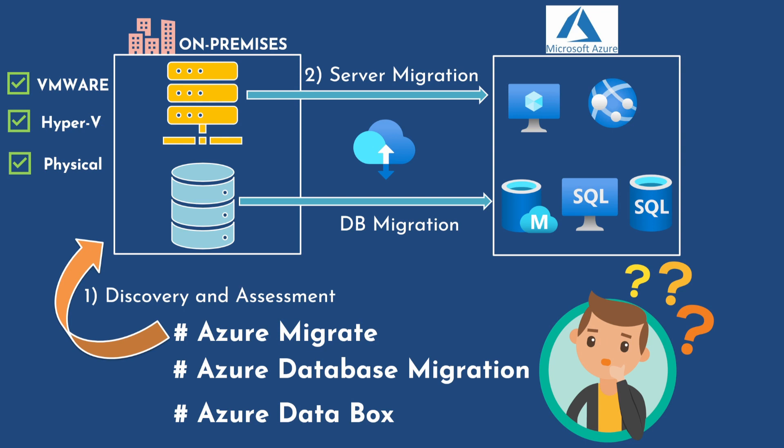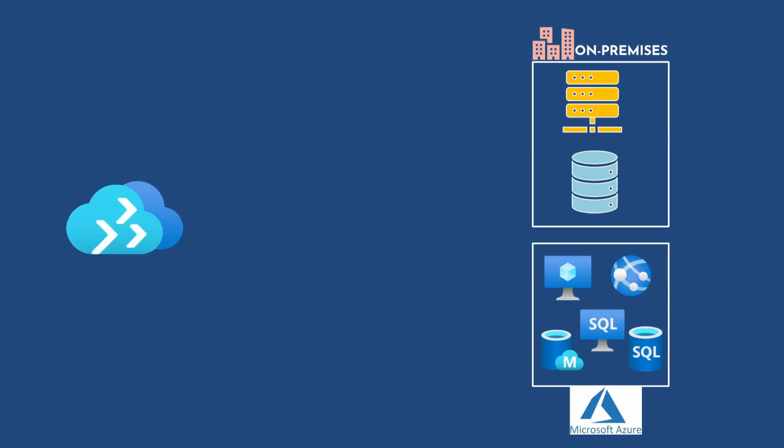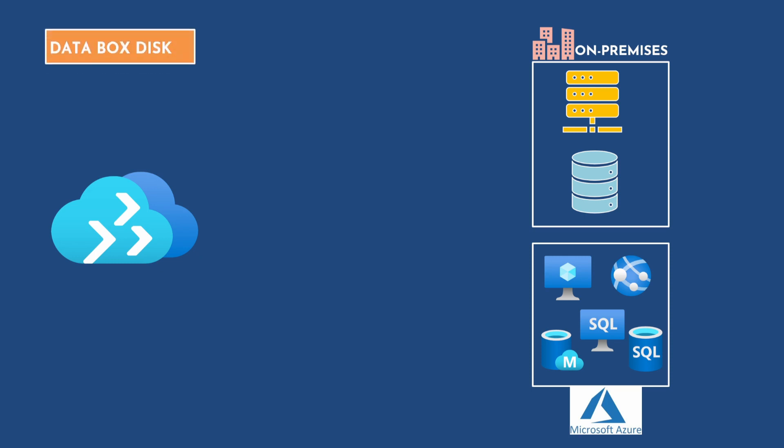We also have Azure Data Box, which is used to move large amounts of offline data to Azure. It is a physical migration service that helps transfer large amounts of data to Azure. This service comes with a physical appliance — the Azure Data Box — which comes with 5 SSDs of 8 GB each, meaning it supports a total of 40 TB.